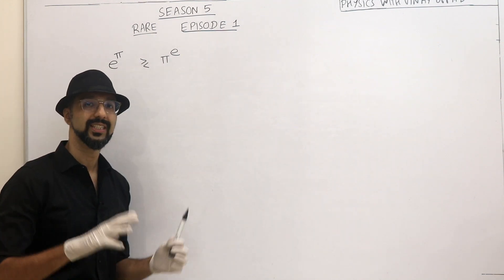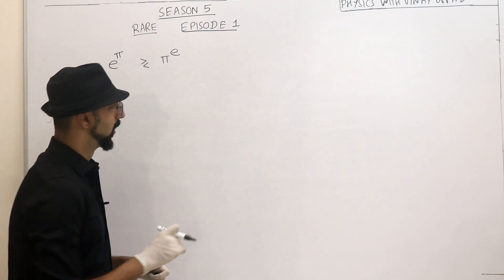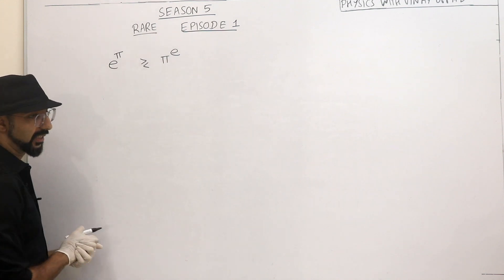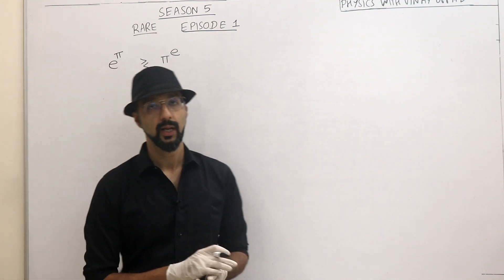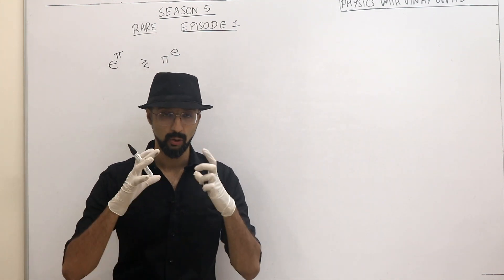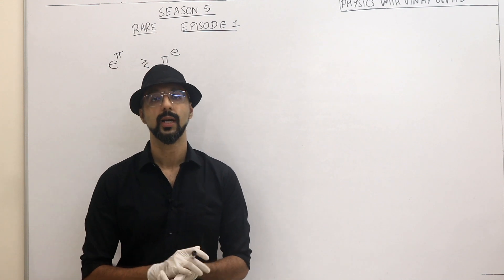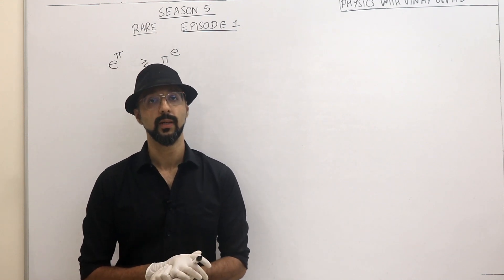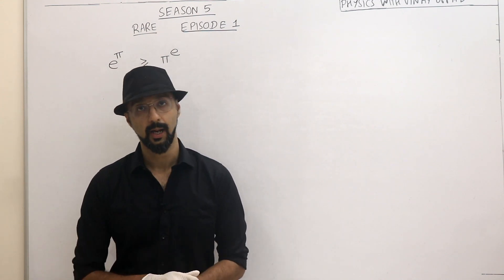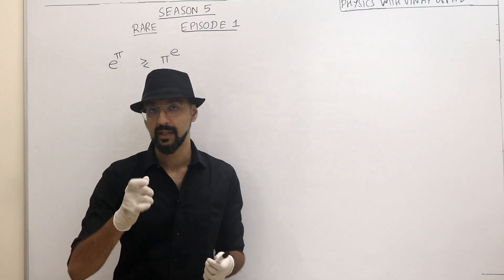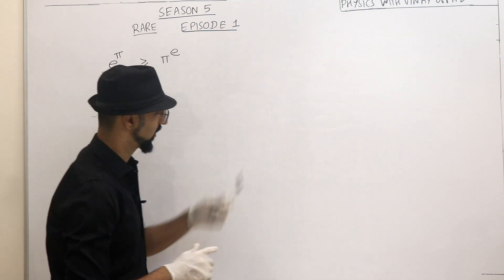We are going to take the help of the second law of thermodynamics. So second law of thermodynamics is that if there is an isolated system or your universe, if you see the entropy of the irreversible process, the entropy always increases. And this fact is what is going to help us solve this maths problem.